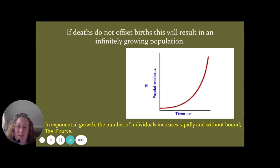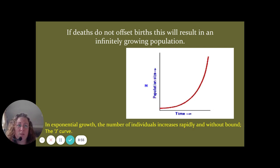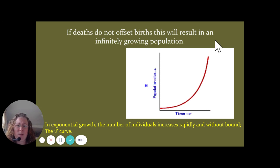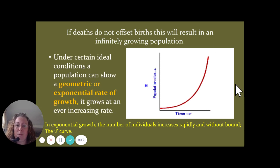If we don't have deaths to offset births, what we get is exponential growth — a J-shaped curve with rapid growth. Rapid growth equals exponential growth, and we call this R-growth. It's rapid growth over time. If we don't experience deaths, we get this curve. That is exponential growth under ideal conditions.